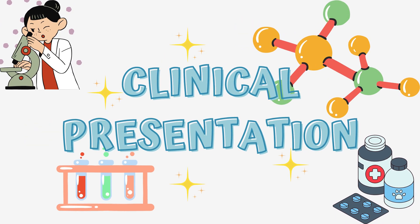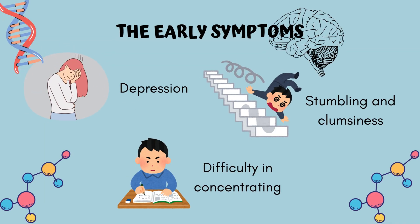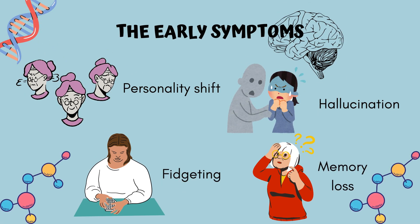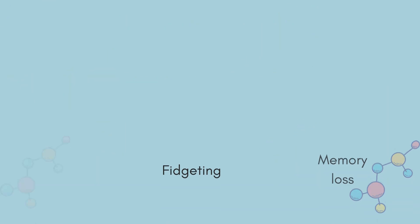The clinical presentation of Huntington's disease is divided into early and late stages. Early symptoms include depression, difficulty concentrating, stumbling and clumsiness, personality shifts, hallucination, fidgeting and memory loss.